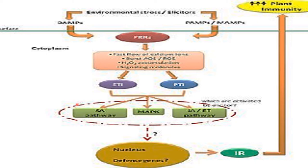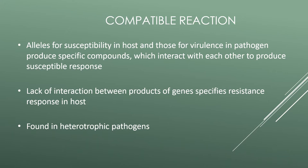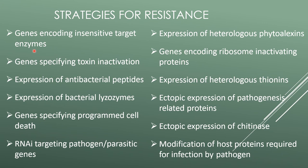This initiates severe biochemical reactions, producing reactive oxygen species, phytoalexin biosynthesis, cell wall reinforcement, and release of hydrolytic enzymes or inhibitor proteins, resulting in rapid cell death. In the compatible reaction, alleles for susceptibility in the host and alleles for virulence in the pathogen produce specific compounds that interact to produce a susceptible response. There is a lack of interaction between the products of gene-specific resistance; this response is found in heterotrophic pathogens.